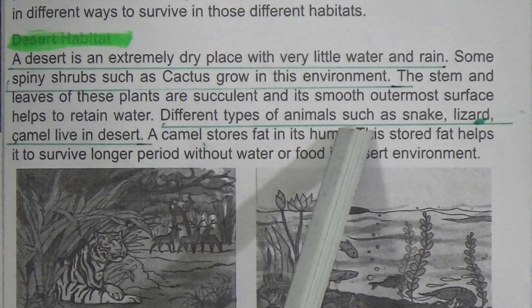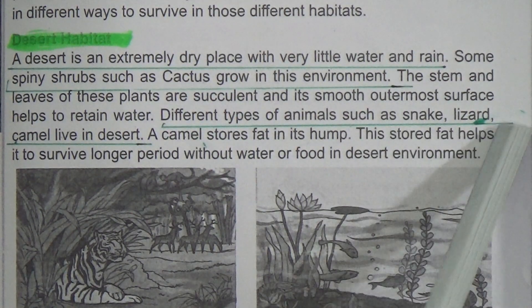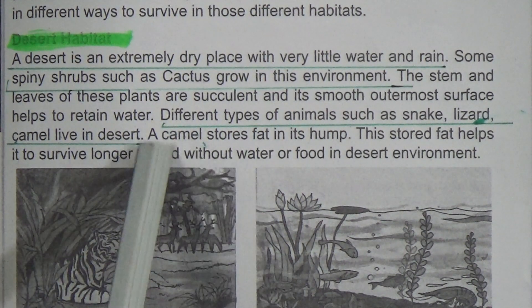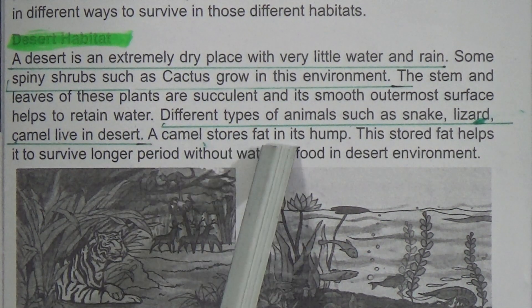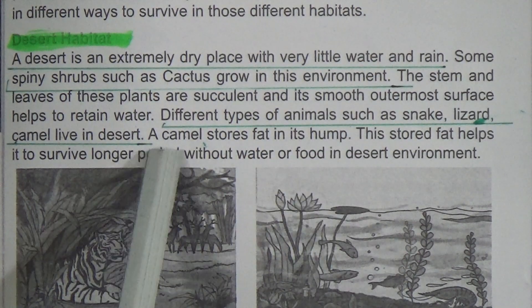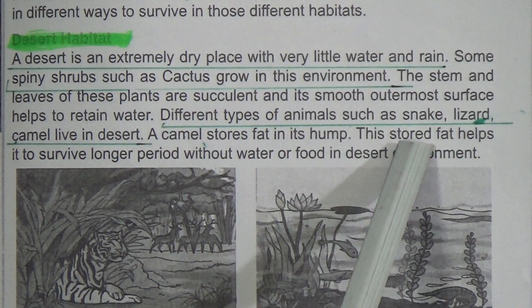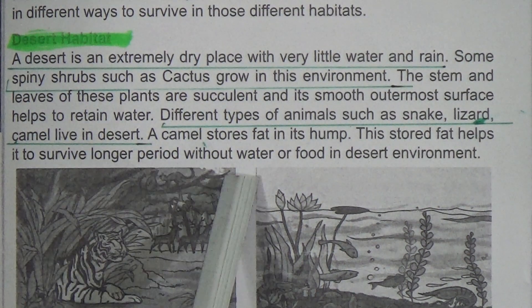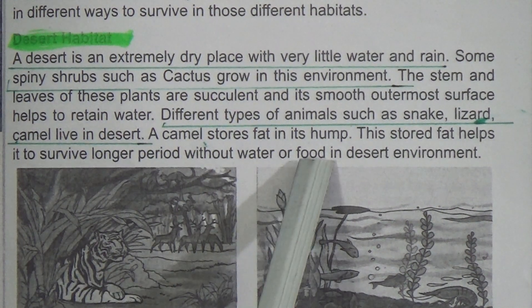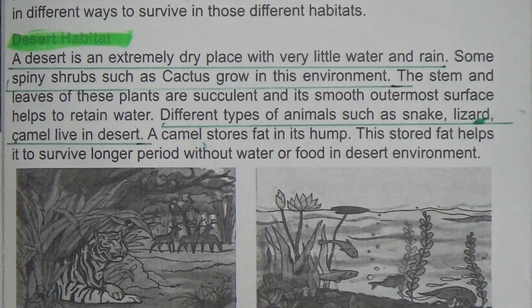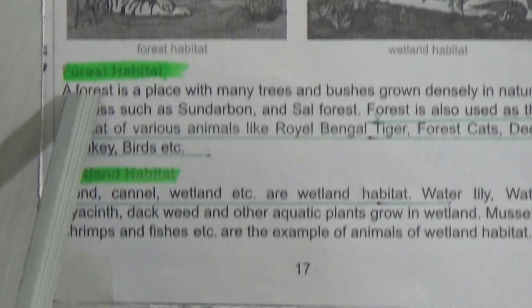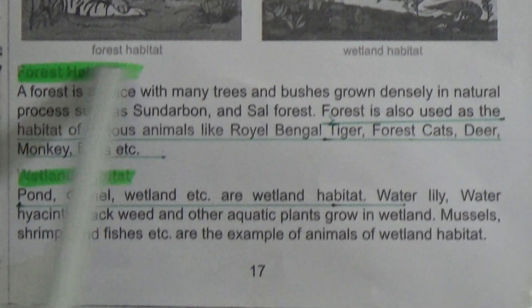Different types of animals such as snakes, lizards, and camels live in the desert — underline this line. A camel stores fat in its hump — underline this line. This stored fat helps it to survive for a longer period without water or food in the desert environment.